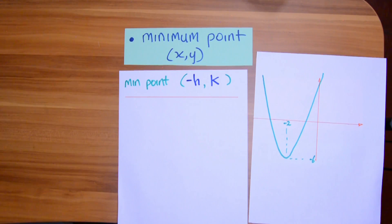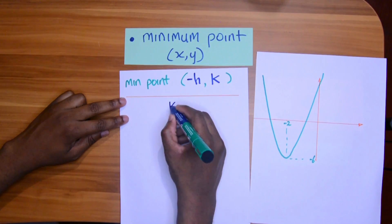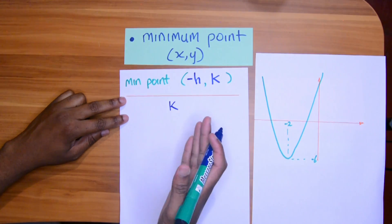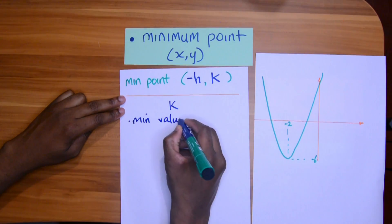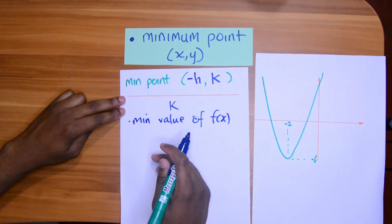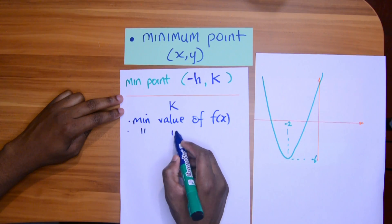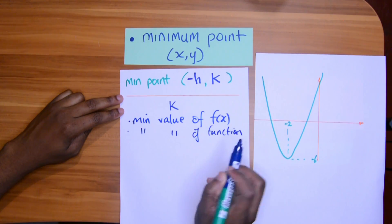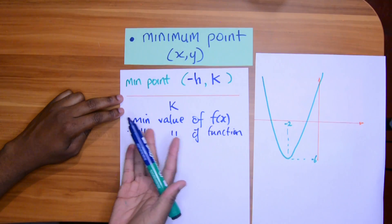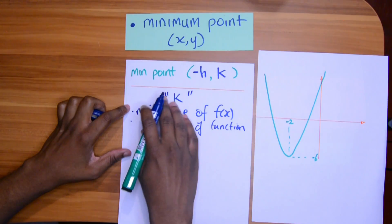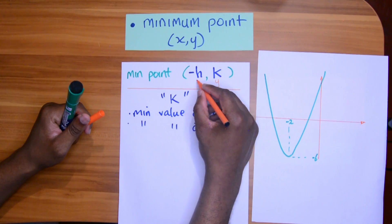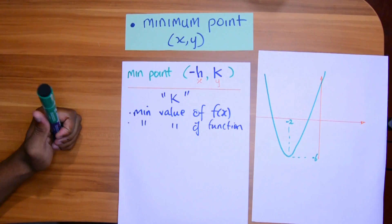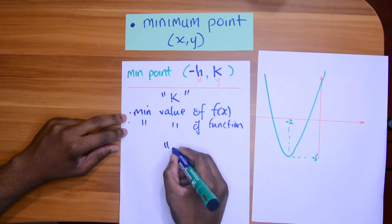They don't always leave it simple. Sometimes they ask for each coordinate separately. For k, they may ask: what is the lowest point the graph reaches? What is the minimum value of f(x)? Or: what is the minimum value of the function? Remember, the same applies if it's a maximum. k represents the y-value of the coordinate, and -h represents the x-value of the minimum point.